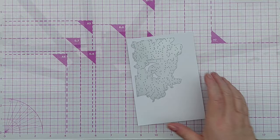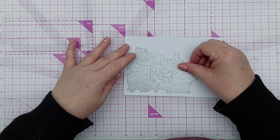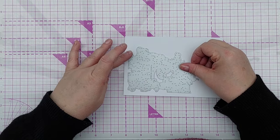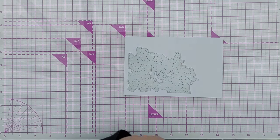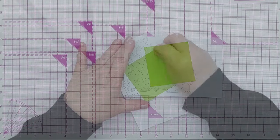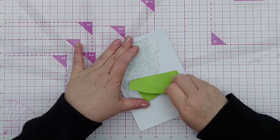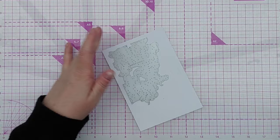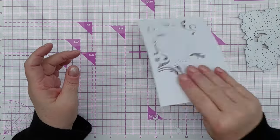So to start with, I've got a Sizzix Aperture die here. It's a lovely scrolly design and I cut it into a piece of hammered white cardstock that's about four and a half by six and a half inches because my finished card is going to be five by seven inches.